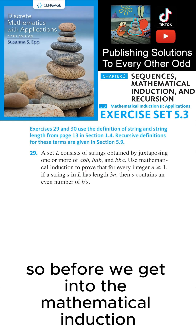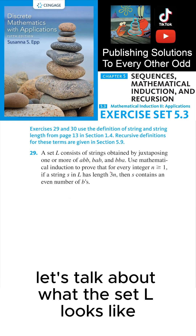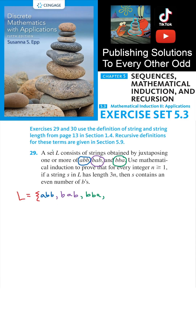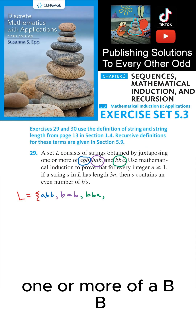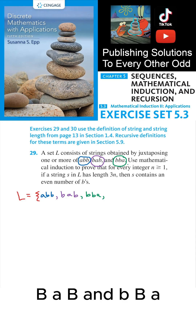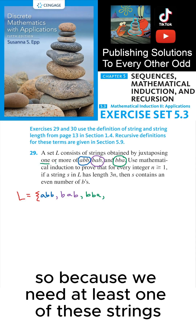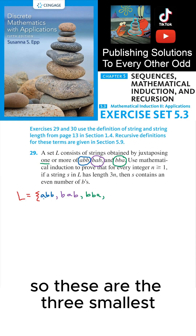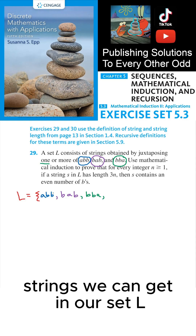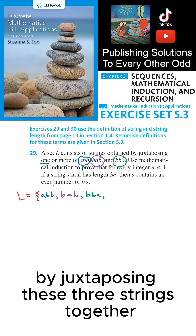Before we get into the mathematical induction, let's talk about what the set L looks like. L is a set of strings. L consists of strings obtained by juxtaposing one or more of ABB, BAB, and BBA. Because we need at least one of these strings, the empty string is not in the set L. These are the three smallest strings we can get in L, and the other strings are obtained by juxtaposing these three strings together.